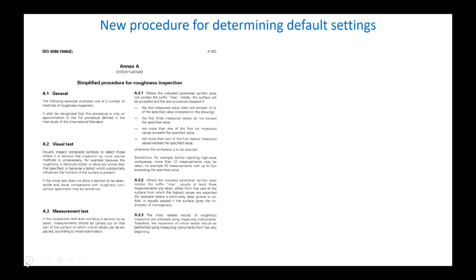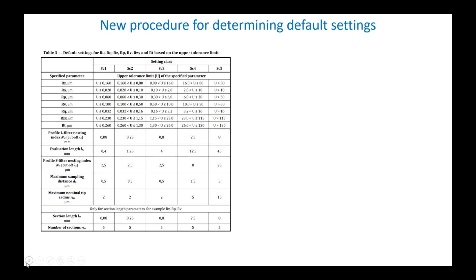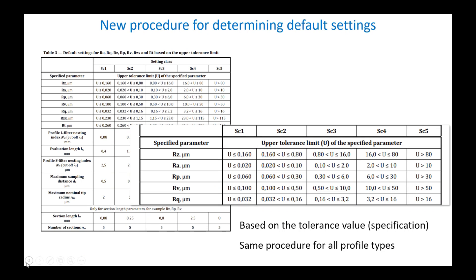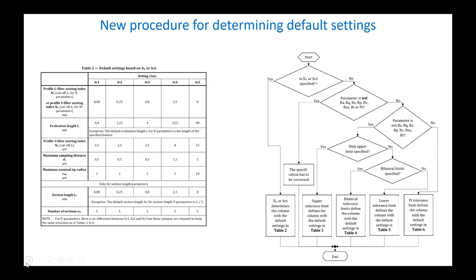A new rule is therefore proposed in ISO 21920-3, based on the tolerance value to define a setting class. Once the class is defined, a second table provides default values for evaluation length, main cutoff, micro-roughness filter, etc.